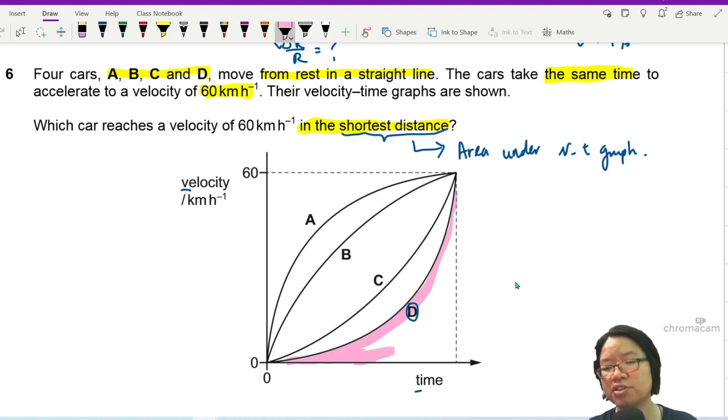Okay, all other curves have a larger area. If you are given a statement question and you are asked to explain why, or why do you think D has the shortest distance?